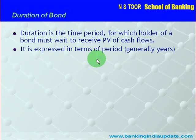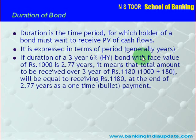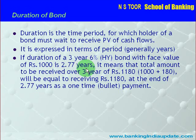Duration is expressed in terms of time period, normally in years. For example, if we say that duration of a 3-year 6% half-yearly bond with face value of Rs. 1000 is 2.77 years — what does it mean?